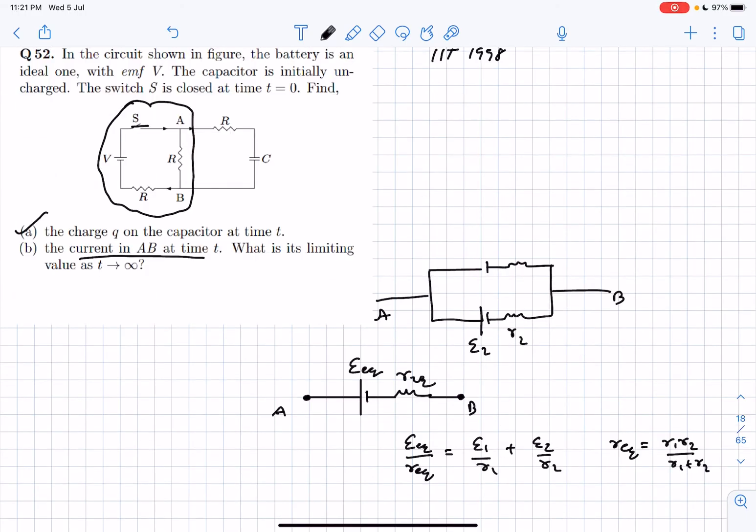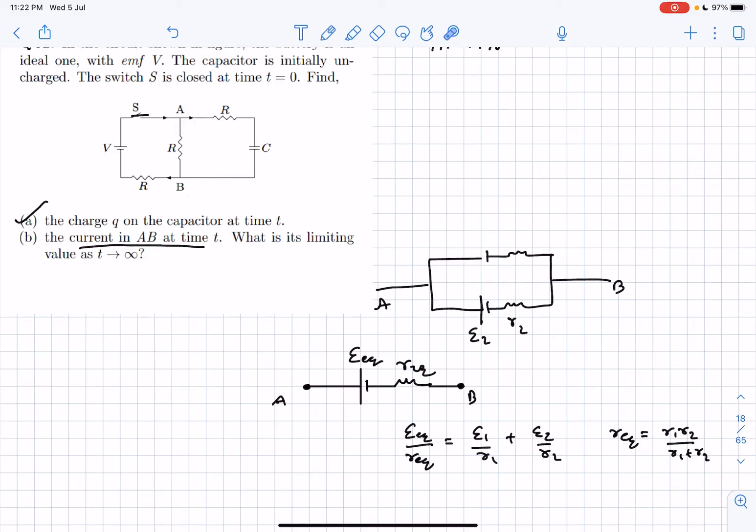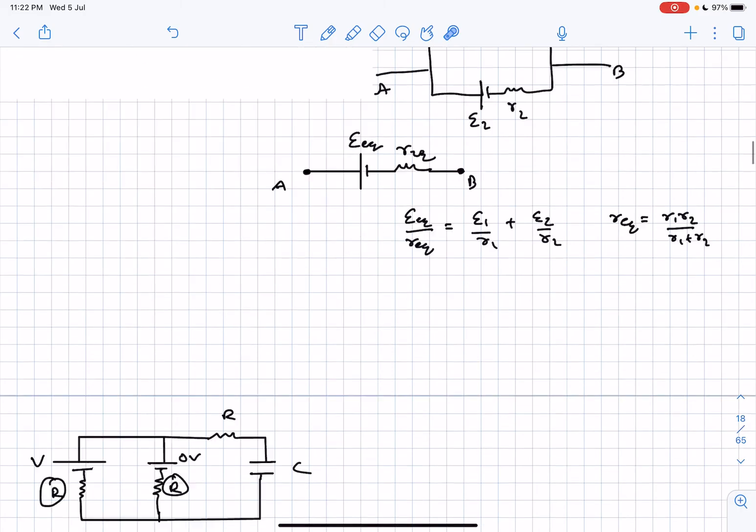The second problem is we have to find the current in branch AB. Whenever you're given circuits like this, make use of the equivalent battery concept. For this problem, we have to go back to our general diagram.